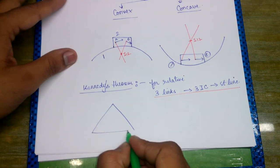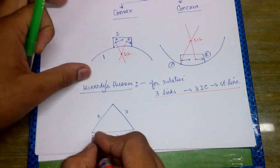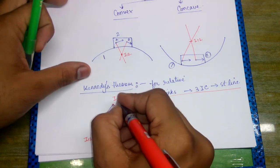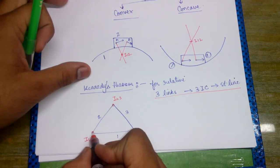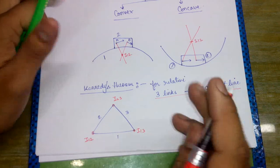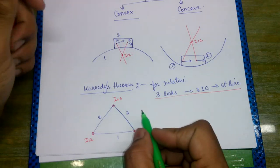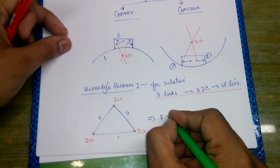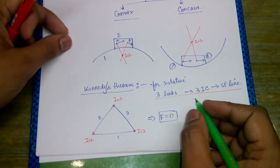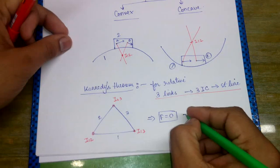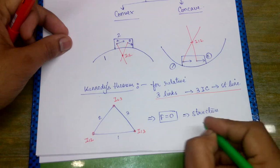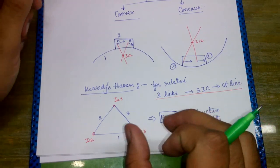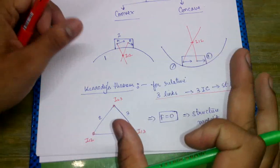For example, if we have three links — link 1, 2, and 3 — we will have the instantaneous center I(1,2) because these form a turning pair. Here we have I(2,3), and I(1,3). Now, these three instantaneous centers are not lying on a straight line, so Kennedy's theorem is not satisfied. The degree of freedom for this mechanism is 0, meaning it is a frame or a structure with mobility 0.